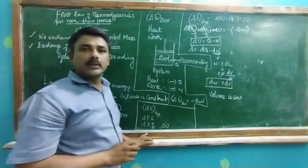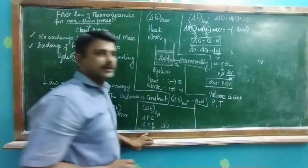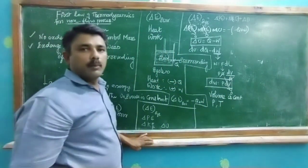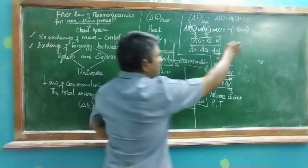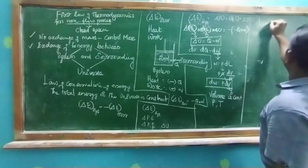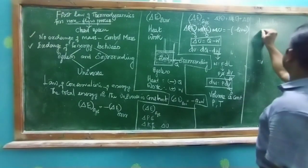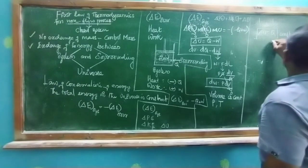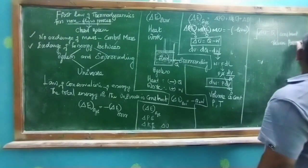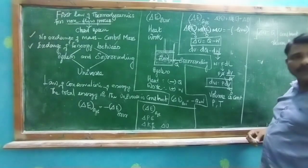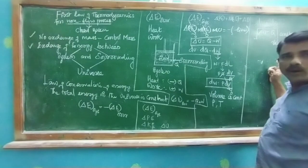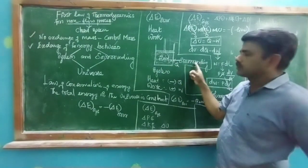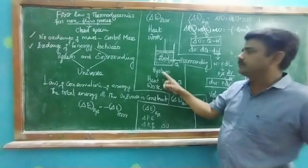Where volume is constant, there is only an increase in pressure and temperature. Since volume is constant, the P·dV term becomes zero, so the W term becomes zero. Hence, this equation becomes dU = dQ, or ΔU = Q. For a process under constant volume condition, the amount of heat added to the system is equal to the changes in internal energy of the system.